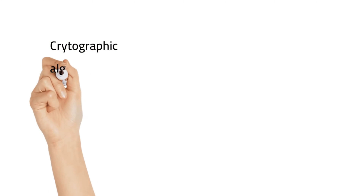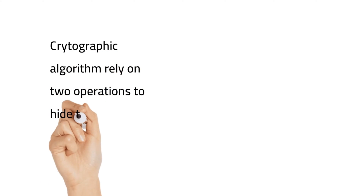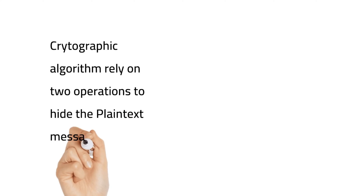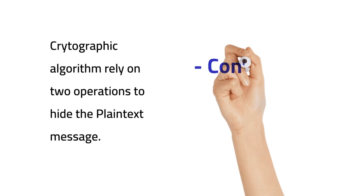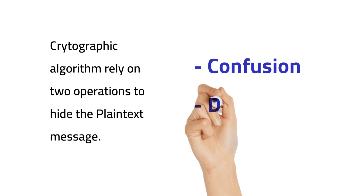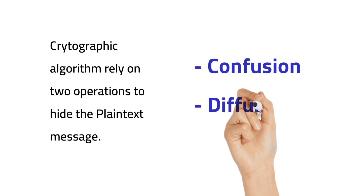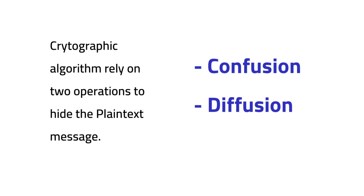Hello, today we are going to see what confusion and diffusion operations are in cryptographic algorithms. Cryptographic algorithms rely on two basic operations to hide the plain text message: confusion and diffusion.